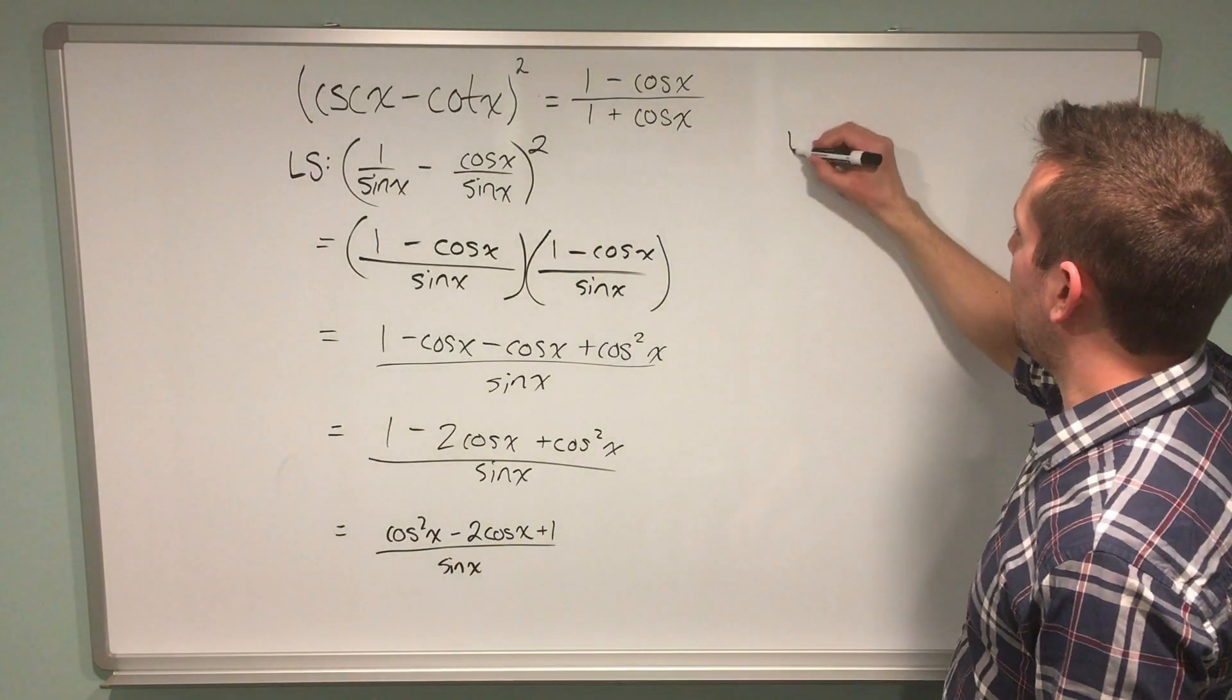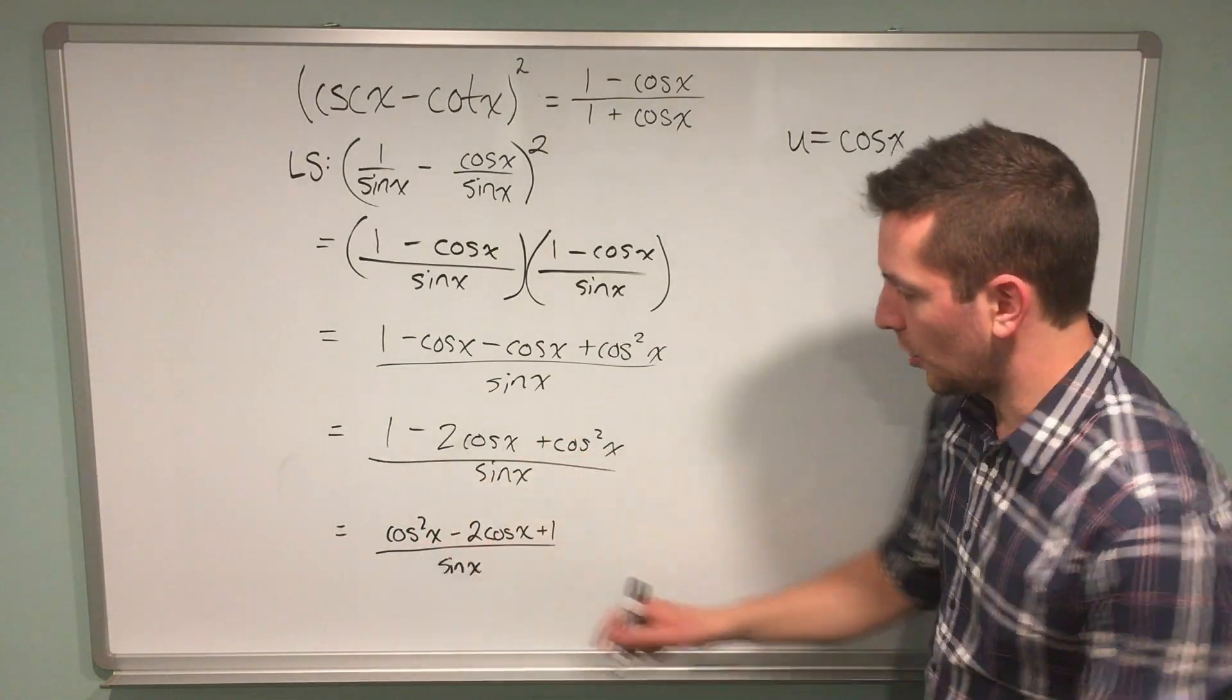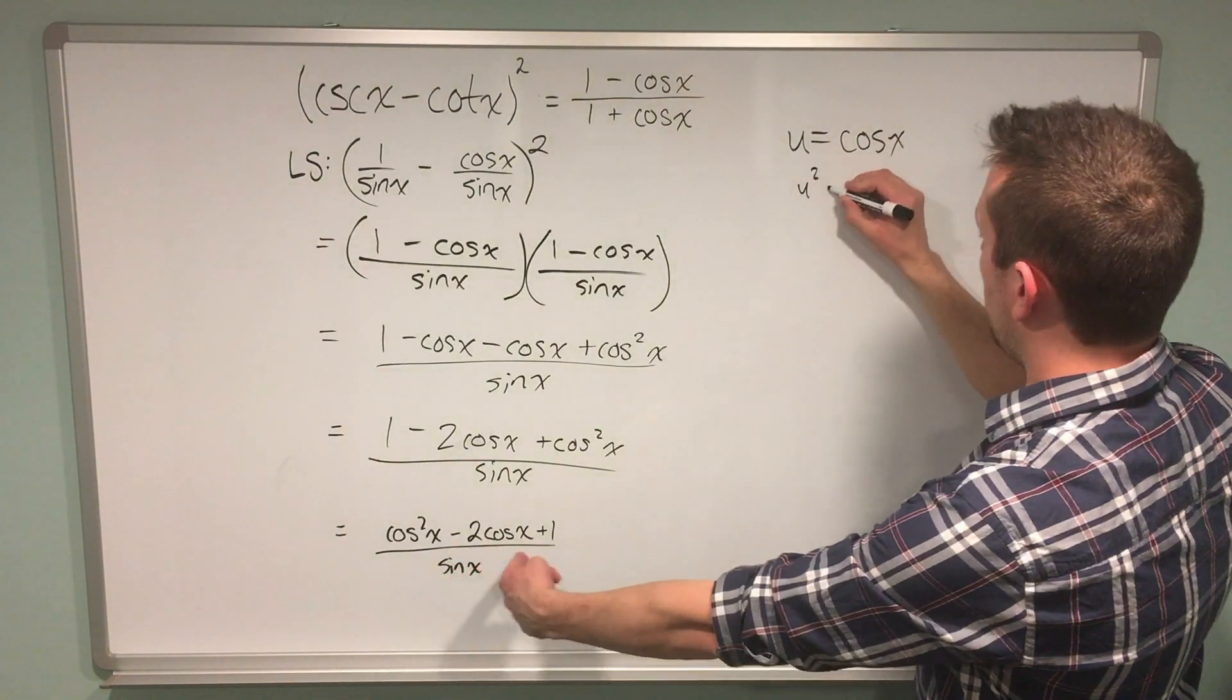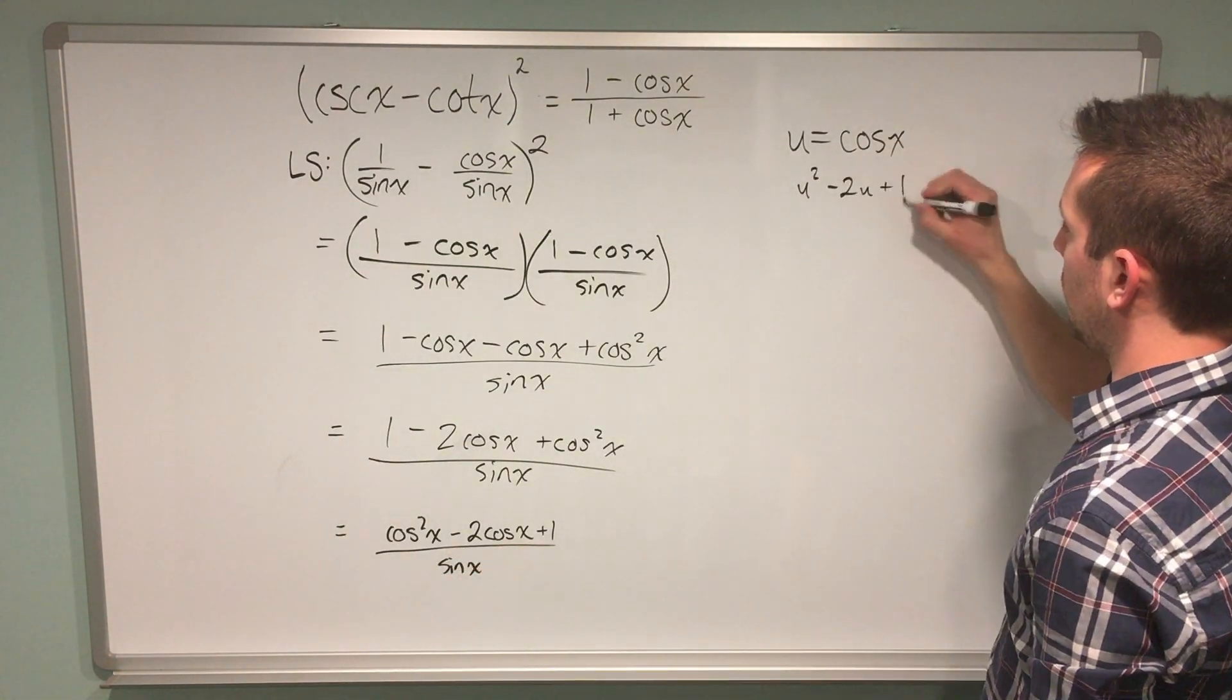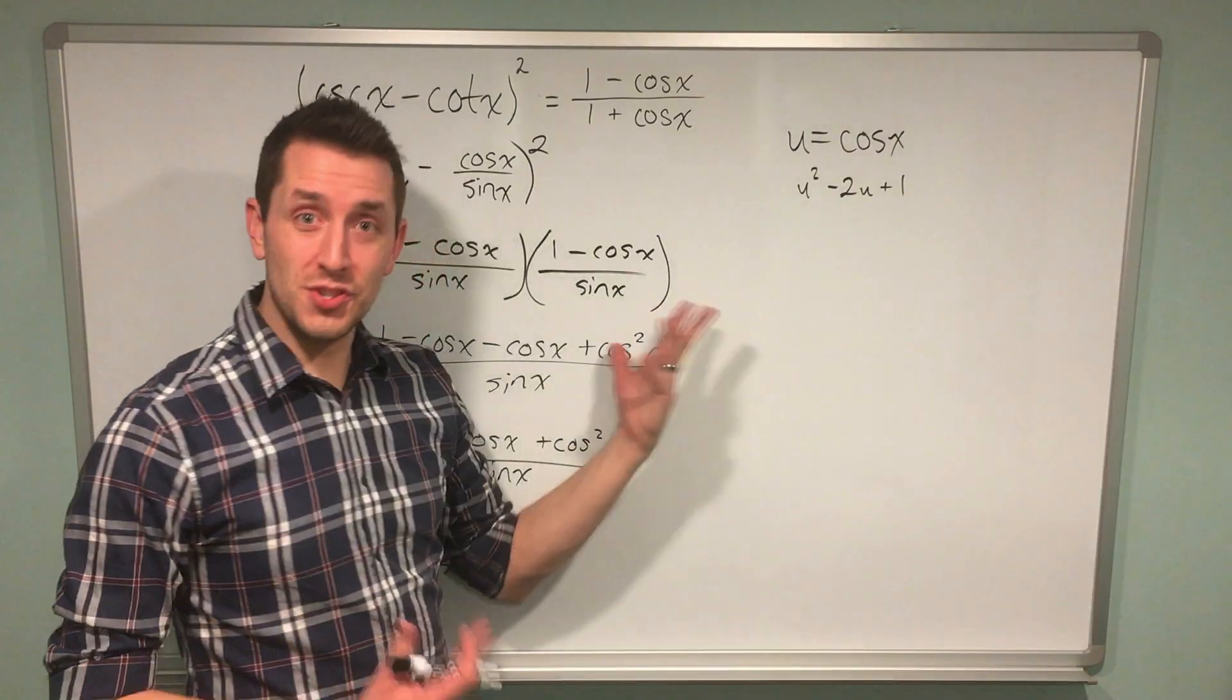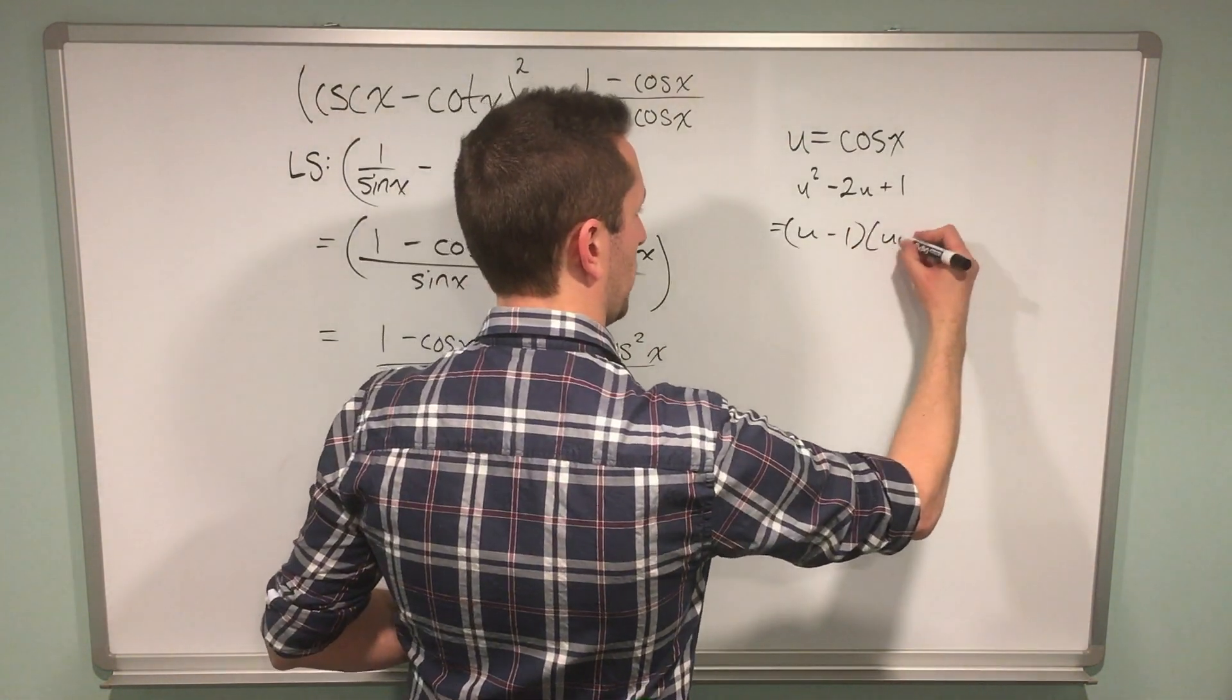Imagine for a moment that I let u equal cos x. In my quadratic expression, wherever I see cos x, I'll put a u. That means I'd have u squared minus 2u plus 1, which more obviously resembles a quadratic expression. As it turns out, this can be factored into u minus 1 times u minus 1.